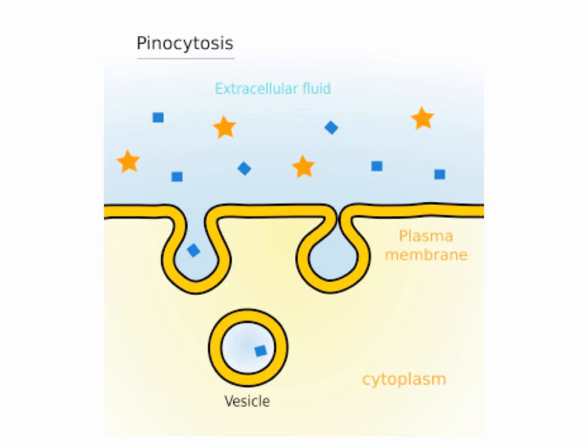If a cell is in an environment that causes it to lose water, it can recover that water by pinching off little bubbles of the surrounding extracellular fluid and bringing those vesicles into the cytoplasm of the cell, where the water can be absorbed.